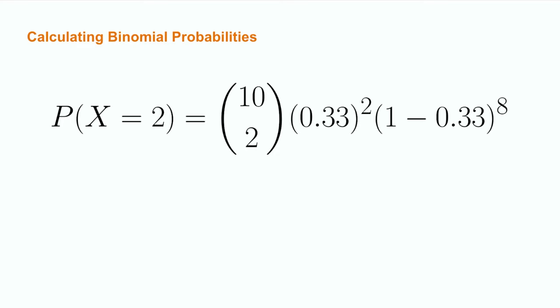Finally, the quantity 1 minus 0.33 raised to the 8 represents multiplying the probability of failure times itself eight times, accounting for the probability of eight failures. This will also always be a number much smaller than one but greater than zero, particularly for large trial sizes. Multiplying these terms together accounts for all the different ways that we can observe the particular two success outcome of the game.